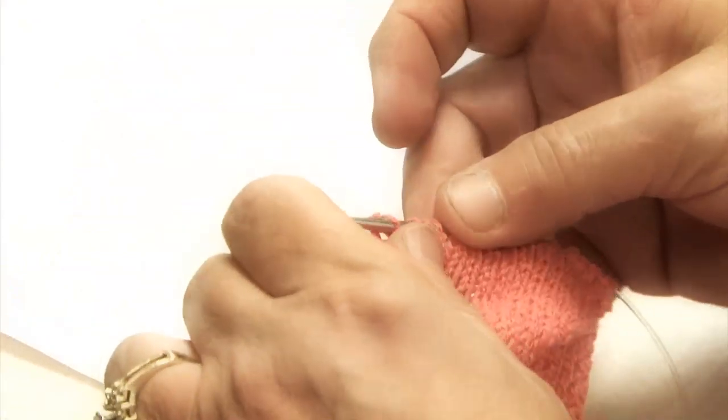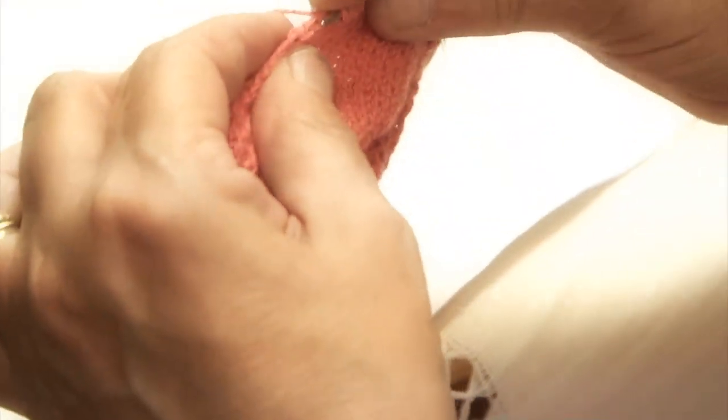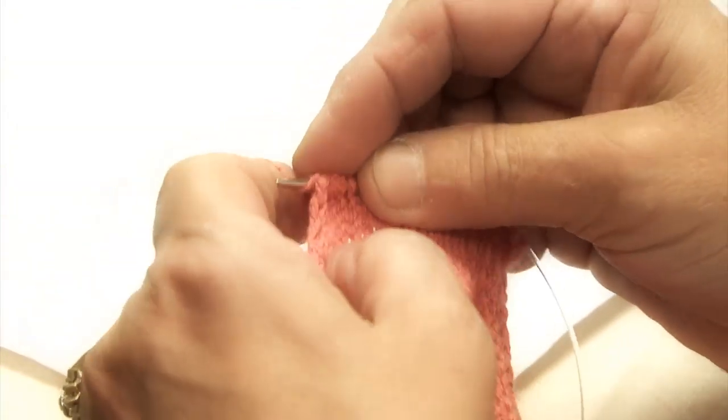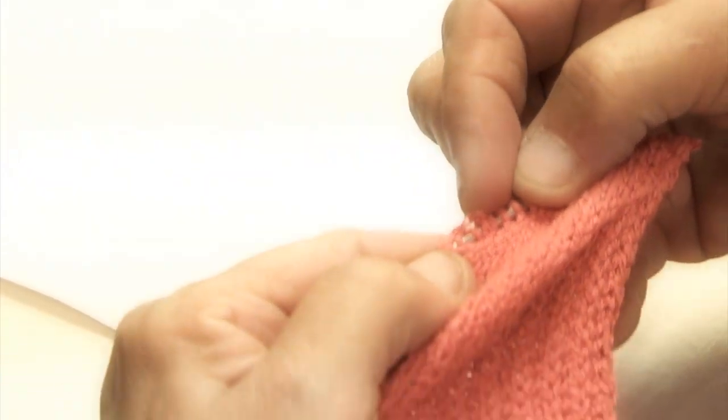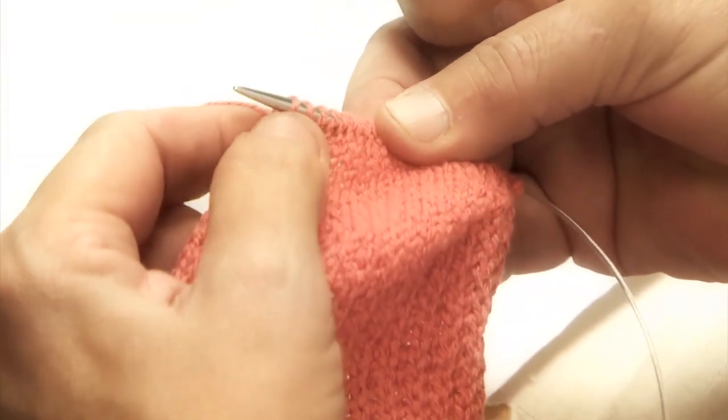So what we're going to do is, takes a little maneuvering for the first one. You're going to go across. Can you see it? Okay, we're going to go across the stitch, going to loop the yarn over and pop it through. That's a stitch right there. So that's number one.